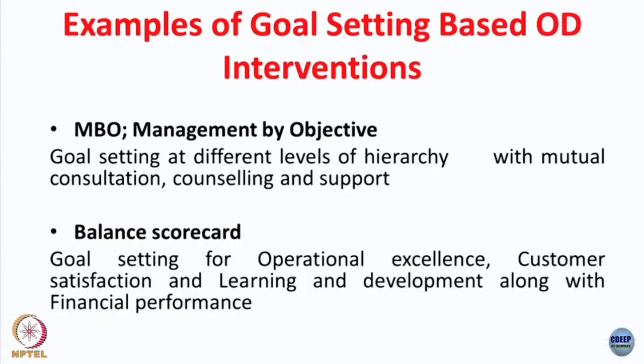Two well-established OD interventions revolve around performance management: MBO, popularized in the 1960s, and the Balanced Scorecard, which became popular in the early 1990s. MBO is about goal setting at different levels of hierarchy through mutual consultation. It includes collaboration and consultation processes while setting organizational objectives, along with counseling and support to employees, groups, and departments. Balanced Scorecard involves goal setting not only about financial aspects but also operational excellence, customer satisfaction, and learning and development goals, giving a full picture of organizational performance.